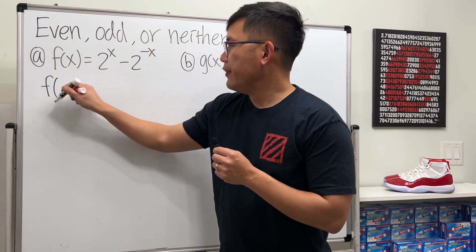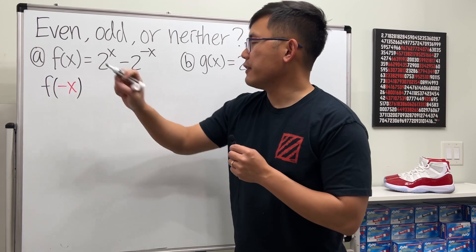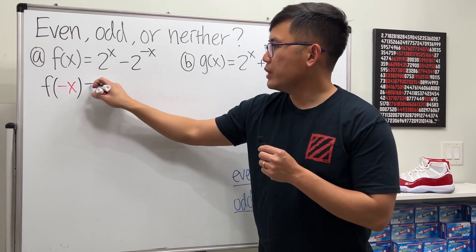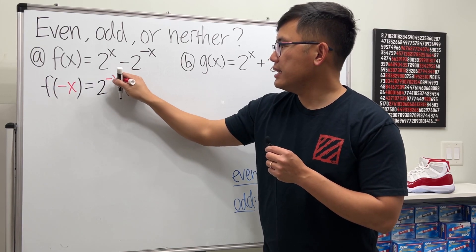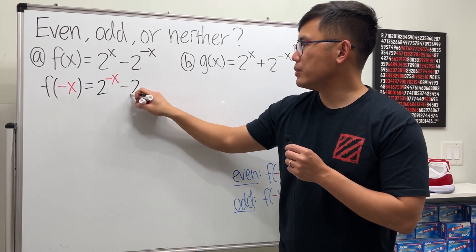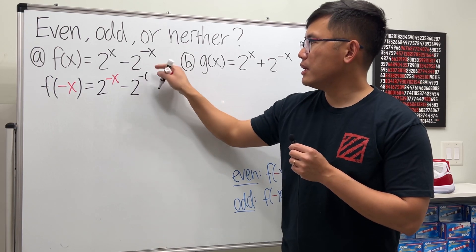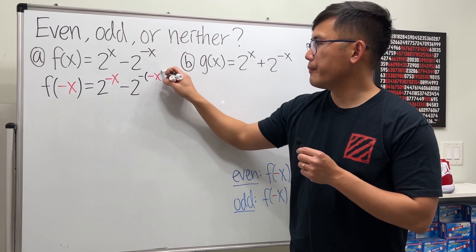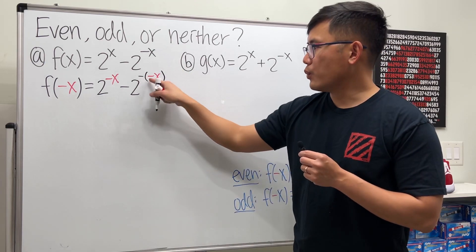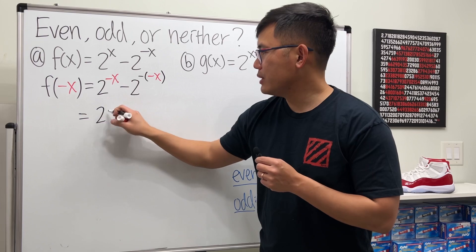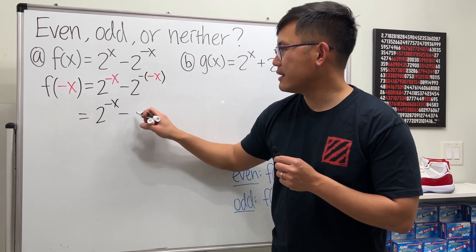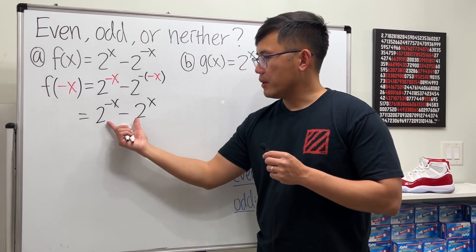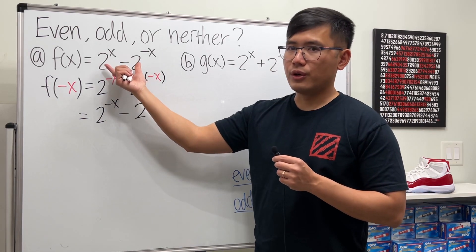Let's plug negative x into the function f. This means we put negative x in here and here, so we get 2 to the negative x minus 2 to the negative of negative x. We can work this out — this right here is 2 to the negative x, and then minus 2 to the positive x.